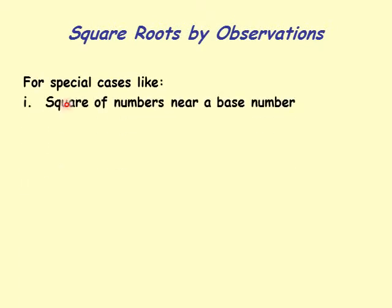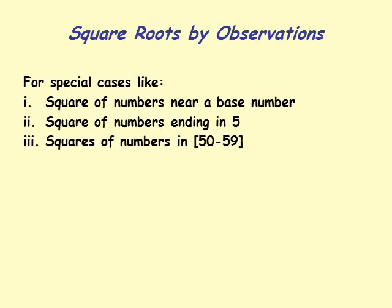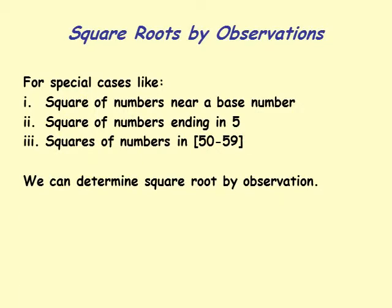For some special cases like square of numbers near a base number, square of numbers ending in 5, and square of numbers in the range 50 through 59, we can determine the square root by observation. Because we know the square, we can use those observations to determine the square root.